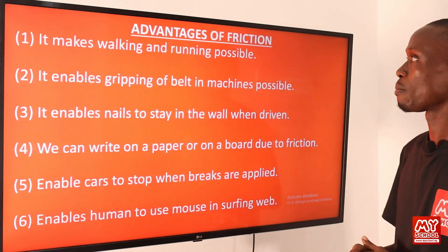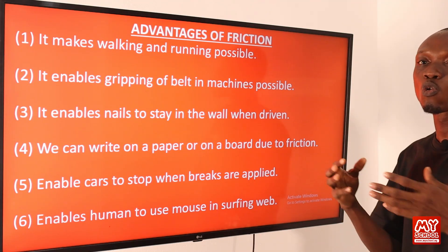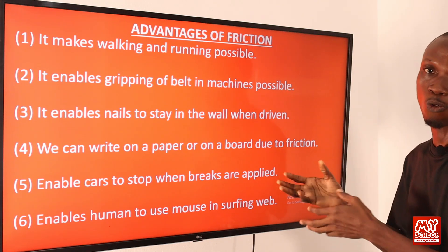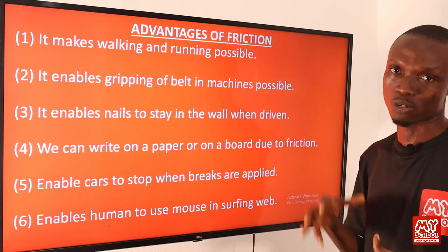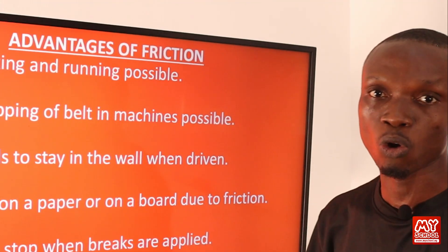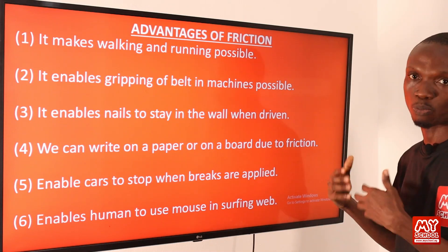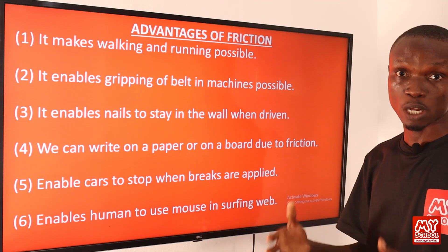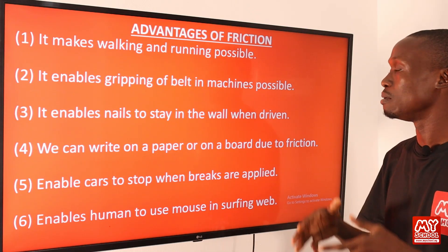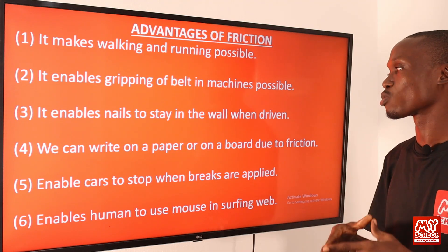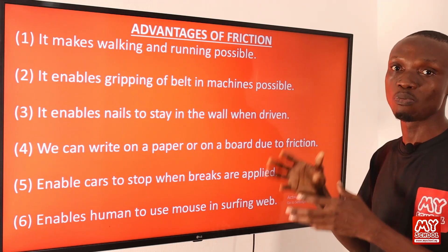Let's talk about the advantages of friction — the good side. Number one: friction makes walking and running possible; without friction, our feet would slip backward. Number two: it enables gripping of belts in machines. Number three: it enables a nail to stay in the wall — the reason a nail driven into a wall remains there is because of friction between the nail and the wall.